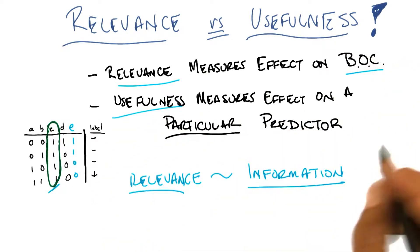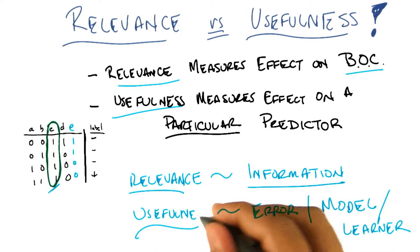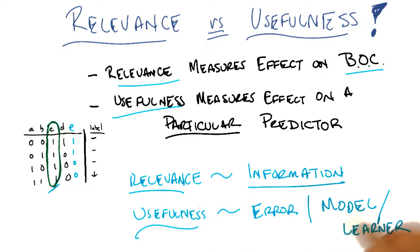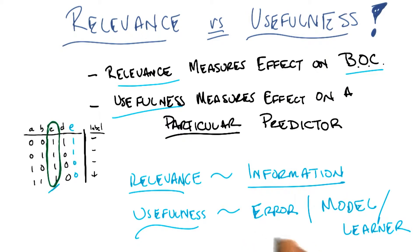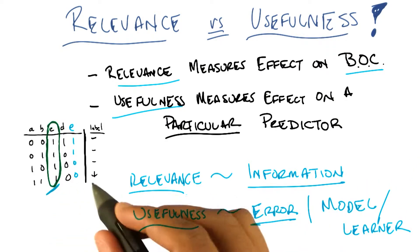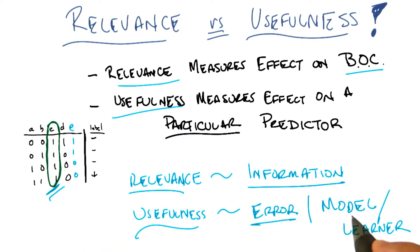Right. So usefulness is exactly about effect on error, given a particular classifier, or some specific model. So usefulness is exactly about minimizing error, given some particular model, or some particular learning algorithm. So in this case, although C is clearly not relevant, it is, in fact, useful, at least for something like W transpose X.